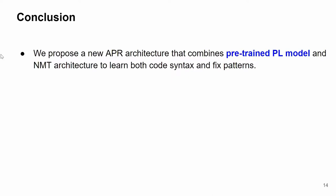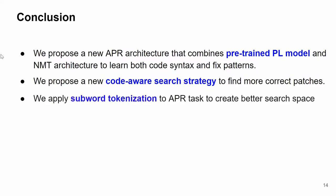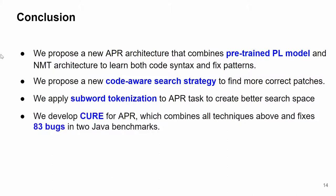In conclusion, in our paper we propose a new APR architecture that combines a pre-trained programming language model and NMT architecture to learn both code syntax and fixed patterns. We propose a new code-aware search strategy to find more correct patches. We also apply subword tokenization to APR tasks to create better search space. By combining all these novelties, we develop CURE for automatic program repair, which fixes 83 bugs in two Java benchmarks. And that's all for my presentation. Thank you for listening.